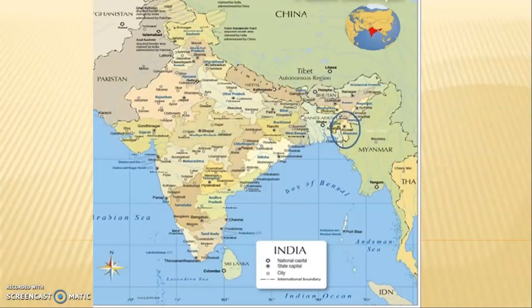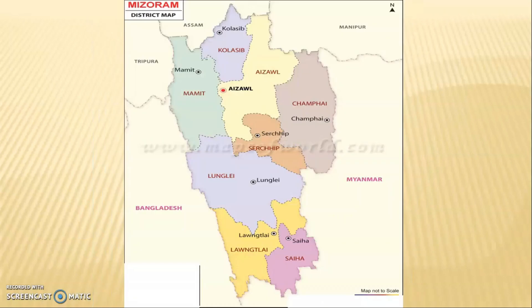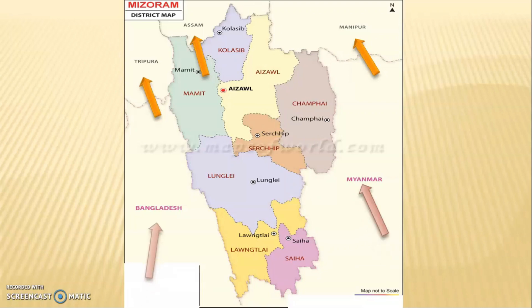Mizoram is situated in the northeast part of India. Now let's see how Mizoram looks on the map. Here you can see the circled portion which is the state Mizoram on the bigger picture. It's surrounded by Manipur to the northeast, Assam to the north, and Tripura to the northwest. Its international boundaries are Myanmar to the east and Bangladesh to the west.